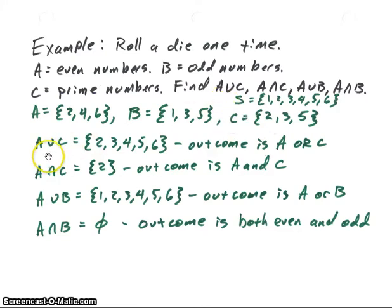A union C is just going to be the union of those two sets, A and C. And so we've got two, three, four, five, and six. So that means that our outcome will be either A or C, either an even number or a prime number. And that set represents either being an even number or a prime number.